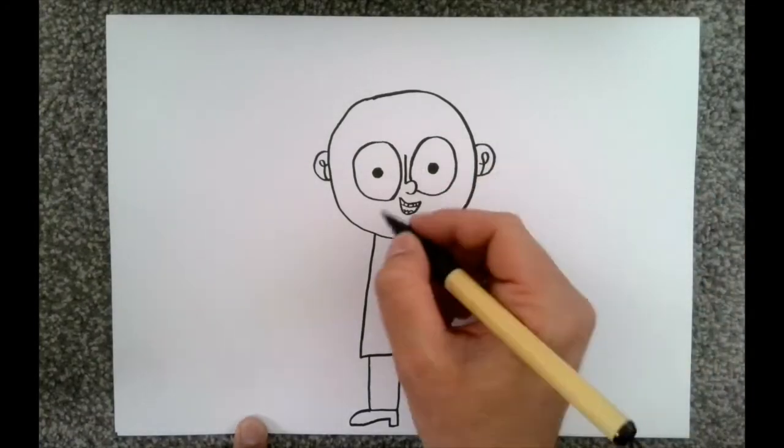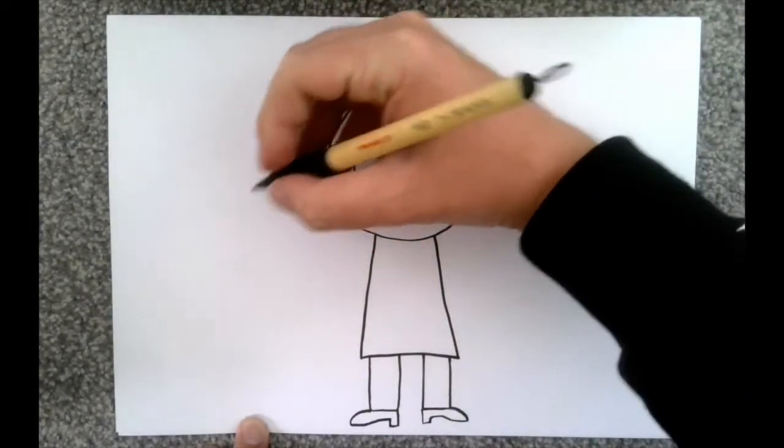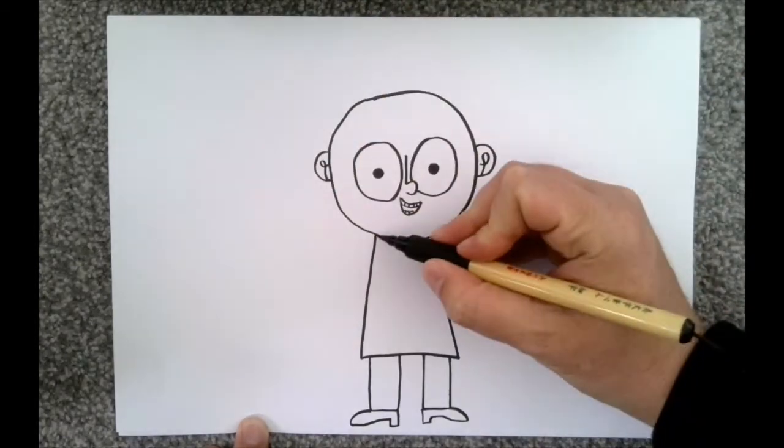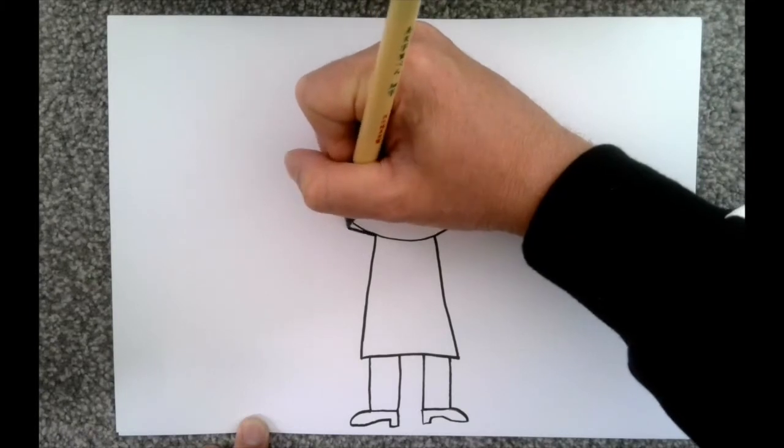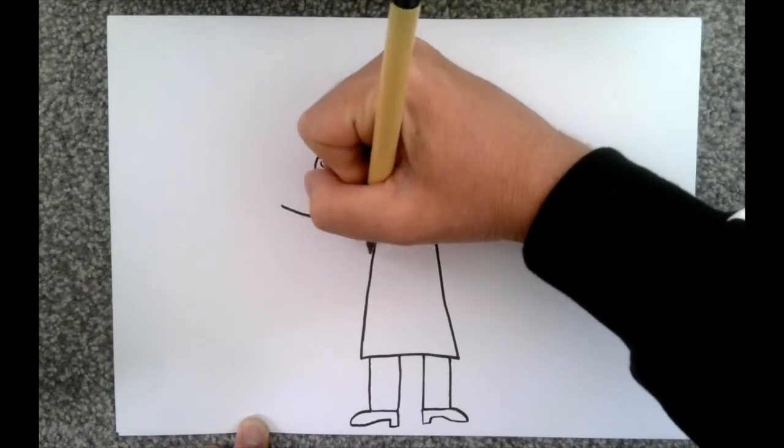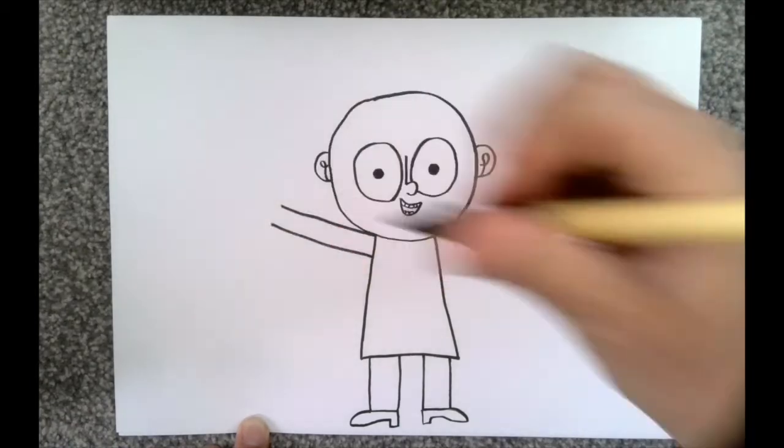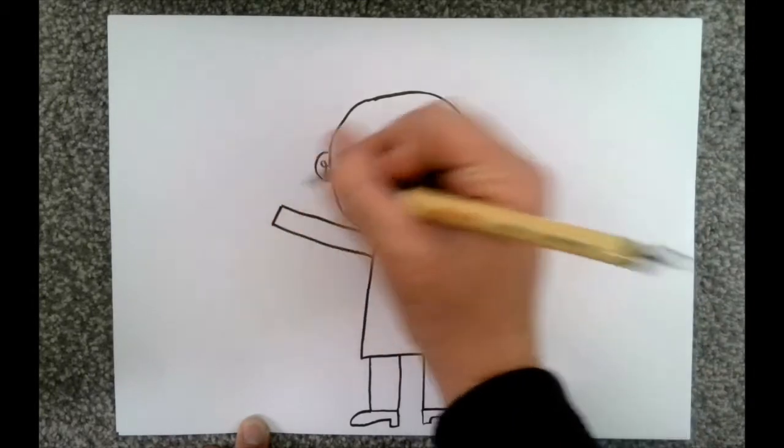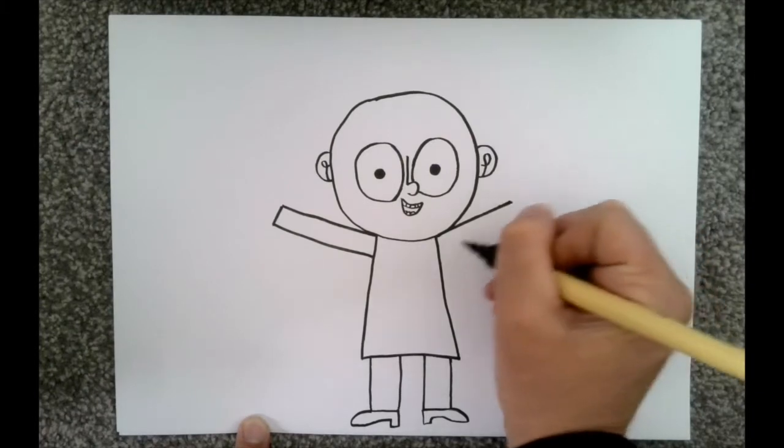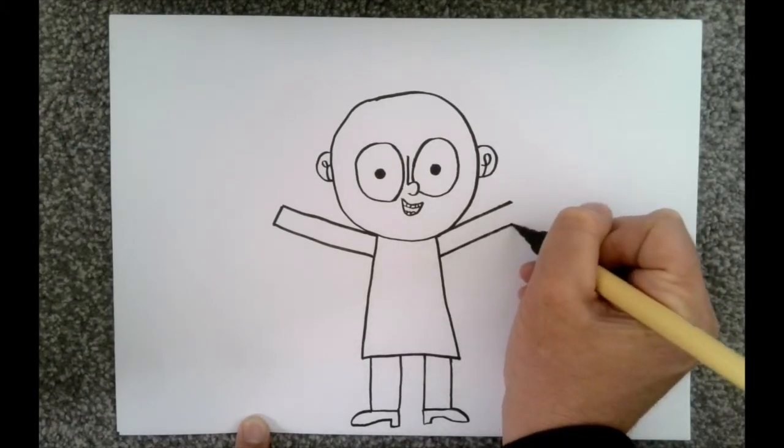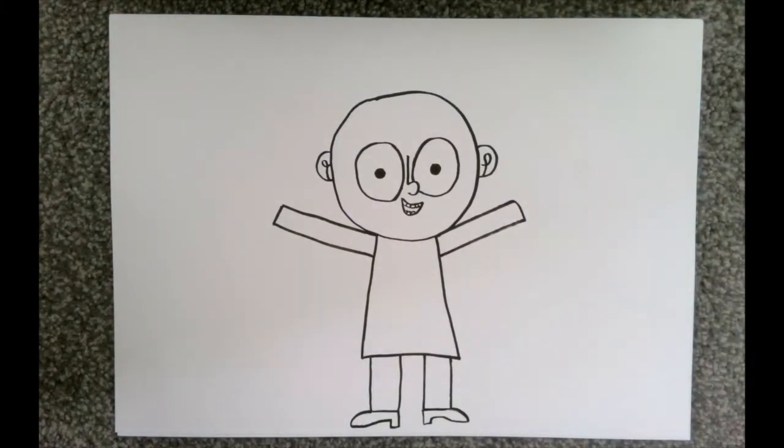Then we're going to do some arms. Now I'm going to have both arms up for this person. They're a both arms up kind of person. So from where we've joined the body and the head, we're going to draw a straight line out. And another straight line out. And we're going to just cross that off there. I'm going to do the same over the other side. There we go. Looking good so far.